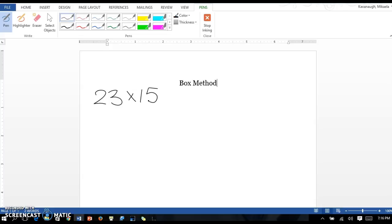So for the box method we're going to create a big box and then divide it into four equal parts. Then we're going to break this 23 apart. So we know that the 2 is in the tens place, therefore it stands for 20. So we'll put that in one column and we know that the 3 is in the ones so it's just a 3.